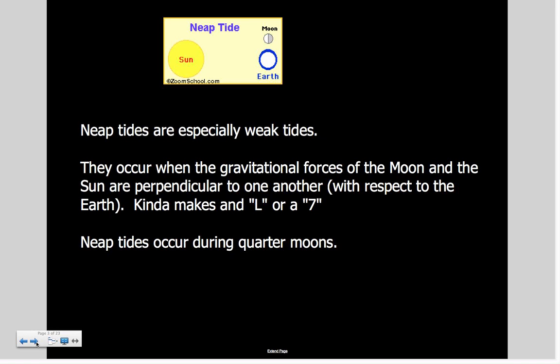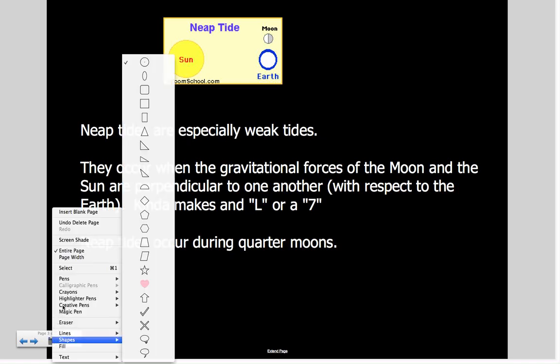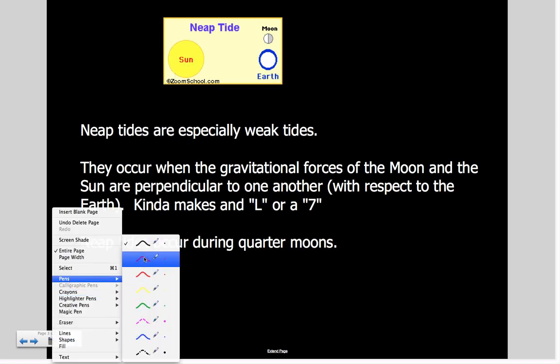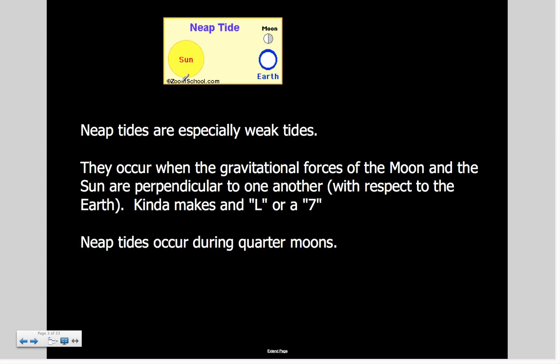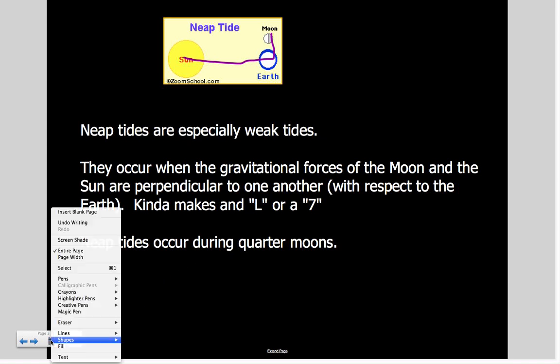The neap tide occurs when the gravitational force between the Moon and the Sun are at their lowest. It's called perpendicular, which means it makes a right angle—like a seven or an L shape. The neap tides occur during quarter moons, so during first quarter and third quarter.